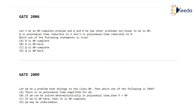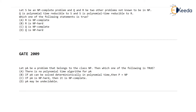The GATE 2009 question says: let PA (named pi in the original question) be a problem that belongs to class NP. So the first argument is PA is a problem which belongs to NP class. This means there is a polynomial time verification algorithm for this problem PA — if some solution is given, you can verify whether that solution is correct for PA in polynomial time.